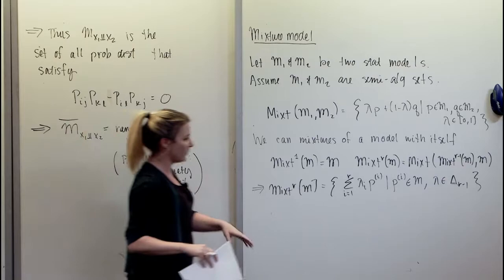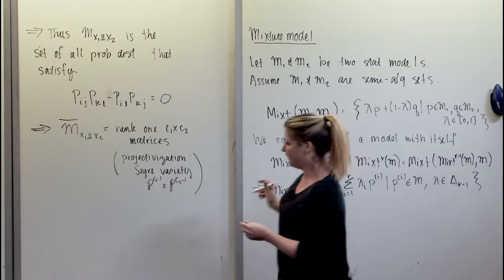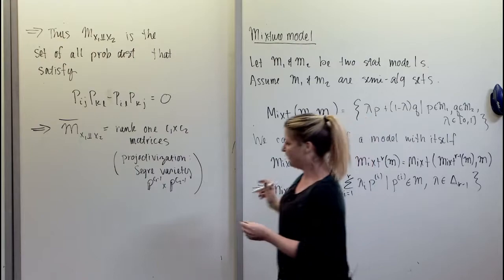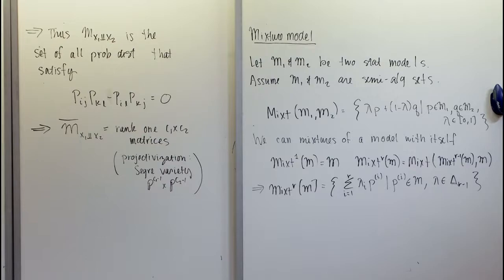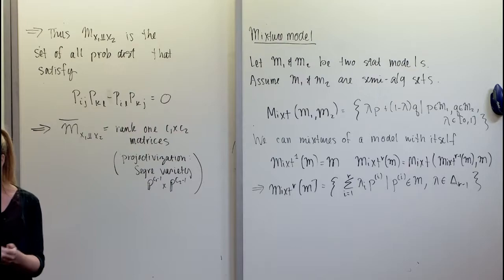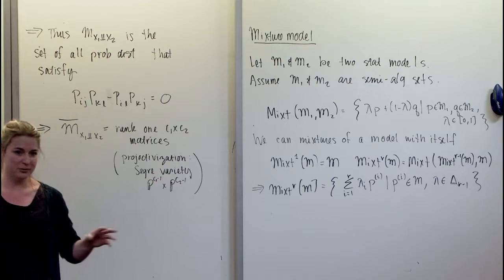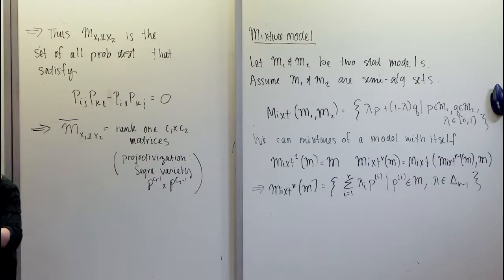There are several canonical examples of mixture models. The first example is a mixture of binomials. Think of it this way: I'm a gambler with two coins up my sleeve — one fair and one biased. I take one out with probability λ and flip it four times; maybe I get all heads. That's the mixture of two binomial distributions.